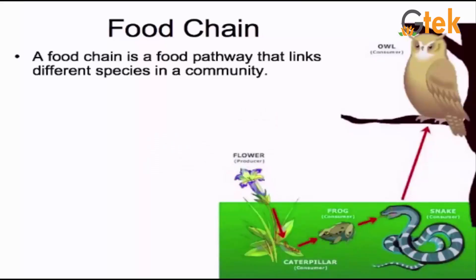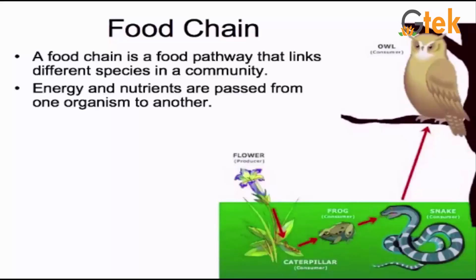The food chain. A food chain is a food pathway that links the different species in a community. The energy and nutrients are transferred from one organism to another. The flower is a producer. The energy is transferred through the producer, then primary consumer and secondary consumer. And the final one is tertiary consumer.